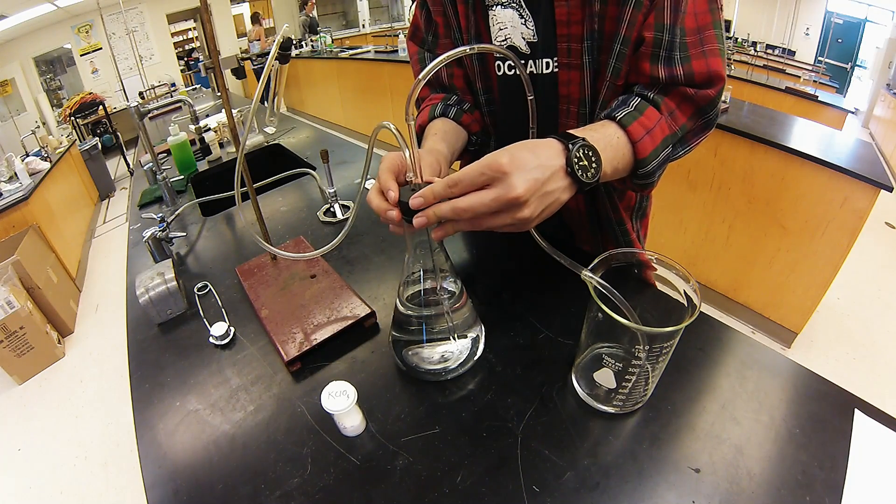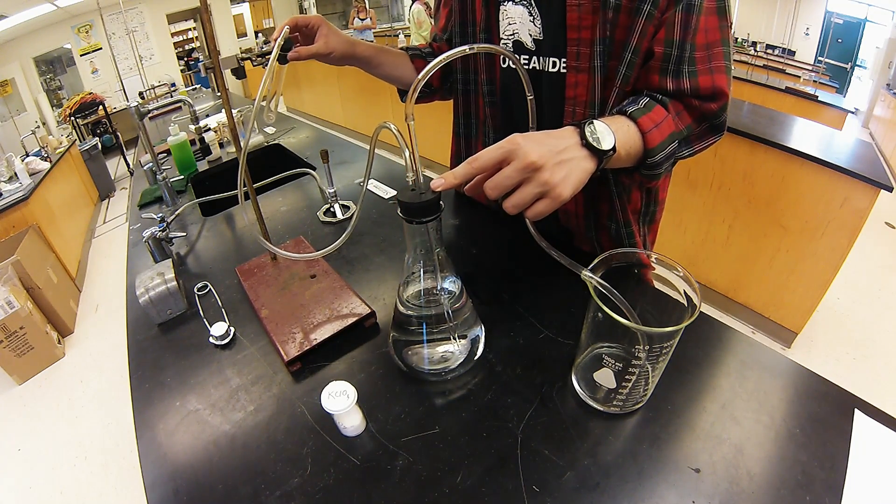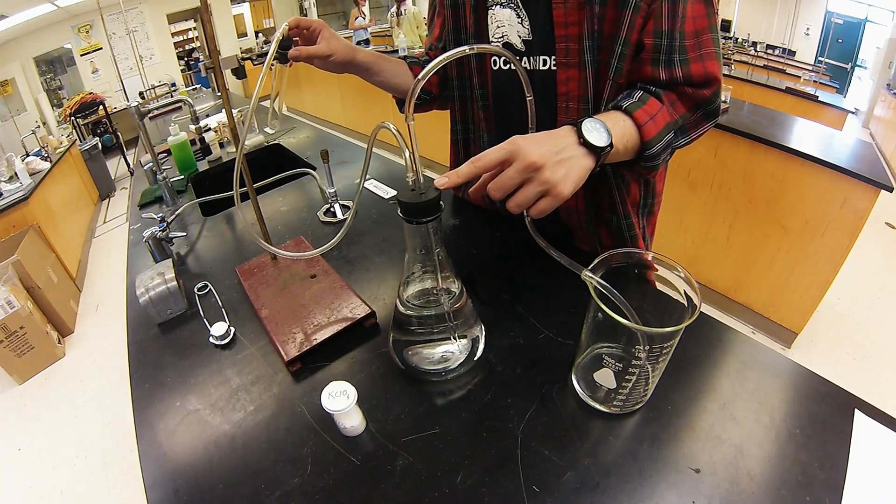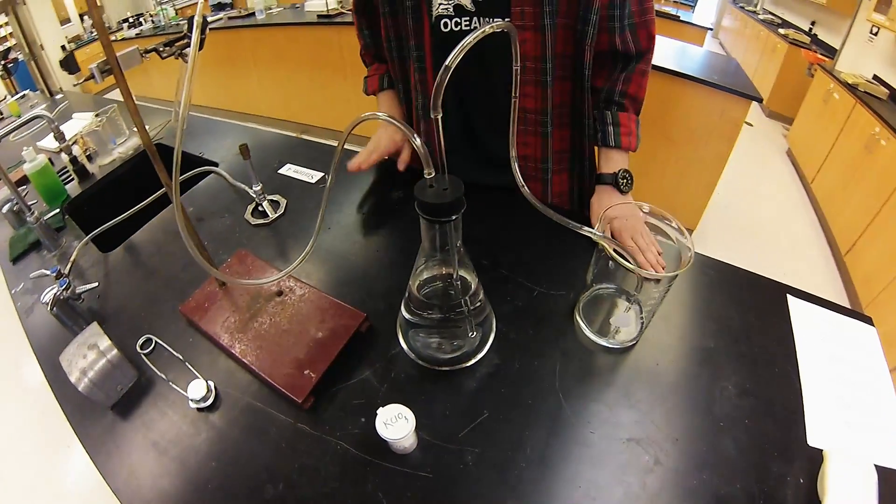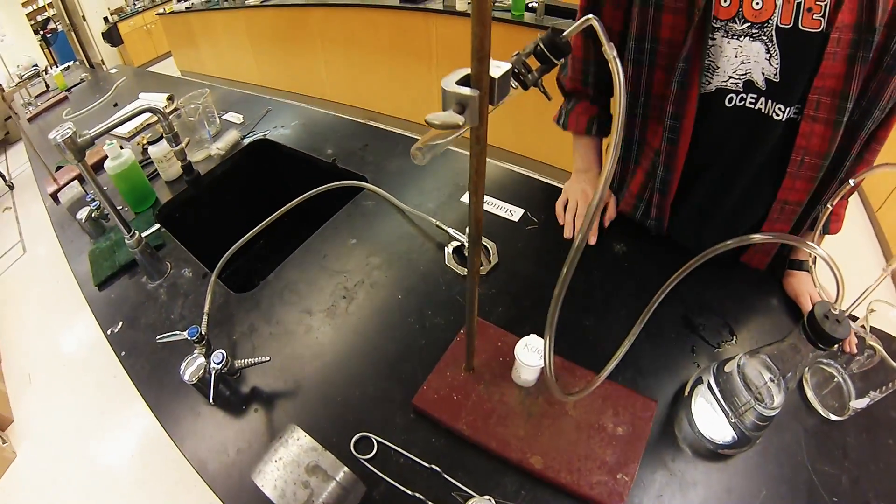We'll need two stoppers - one with two inserts and another with one insert for the test tube - and some tubing to connect it all, and of course the potassium chlorate.